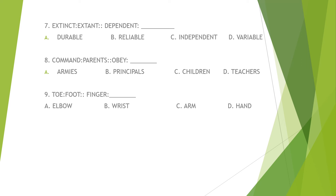Number 7: extinct is to extant as dependent is to... This is an opposite relationship. Extinct means no longer existing while extant means still existing. So we need the opposite of dependent, which is independent. Letter C.